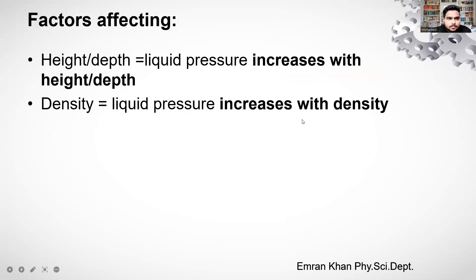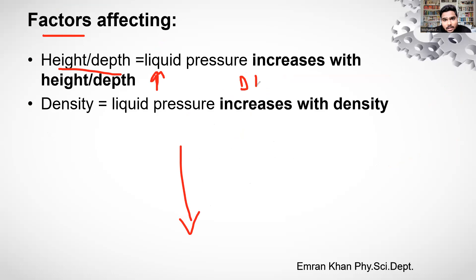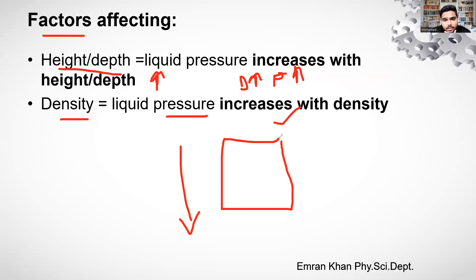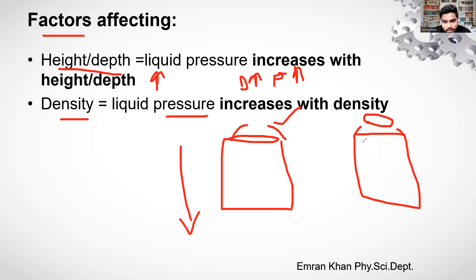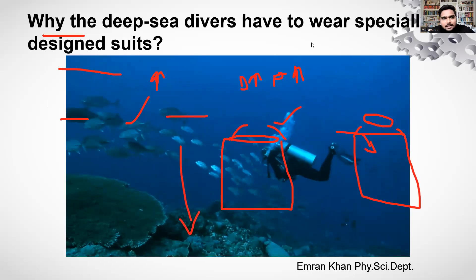If the height or depth of the liquid is greater, the liquid pressure will be higher. Also, if the density of the liquid increases, the pressure will also increase. For example, oil is denser than water, so the pressure in oil at the same depth would be higher than in water.